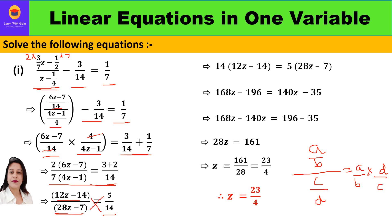So 14 in bracket (12z minus 14) is equal to 5 in bracket (28z minus 7). Opening the brackets: 14 times 12z and 14 times 14 gives 168z minus 196. Then 5 times 28z and 5 times minus 7 gives 140z minus 35. Now take the like terms together: 168z minus 140z.